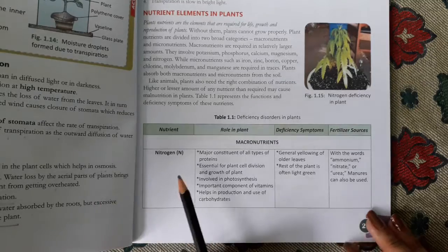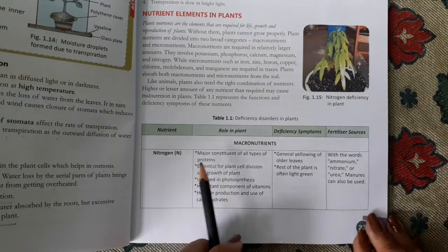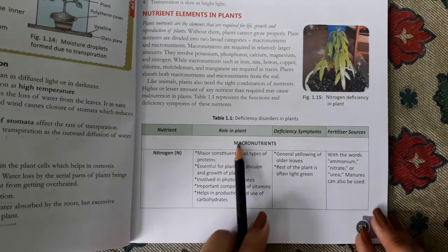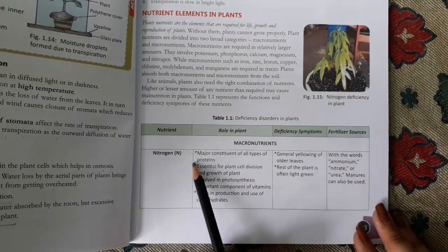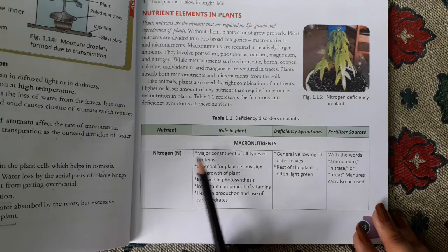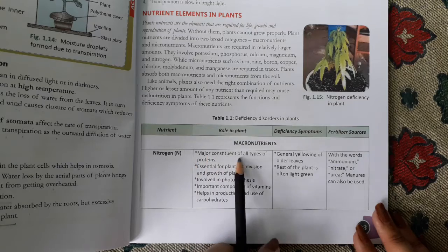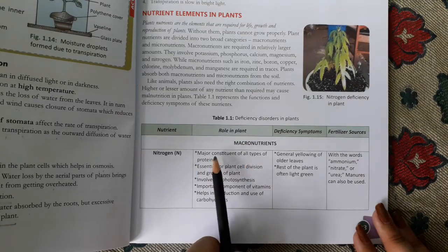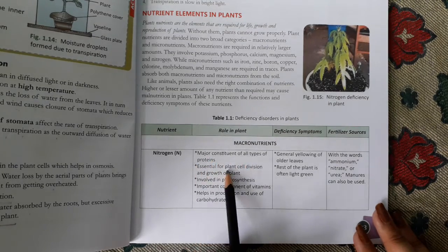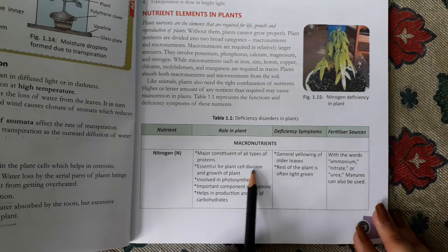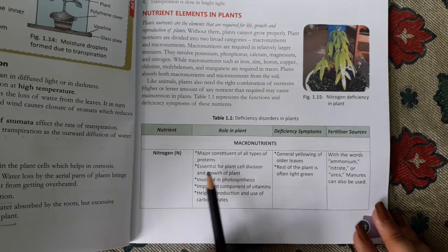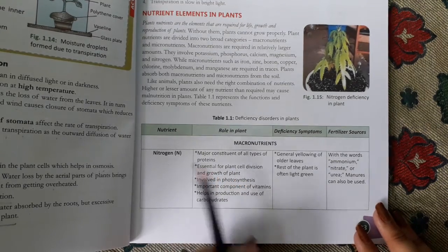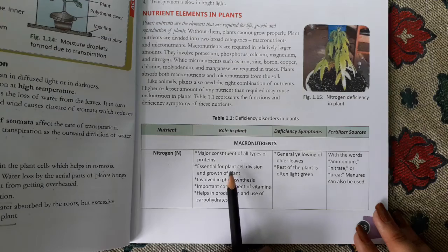First, nitrogen. This is a macronutrient, so it should be in large amounts. It is a major constituent of all types of proteins. It is essential for plant cell division and growth of plants. Nitrogen plays a very important role in plants — it is essential in cell division and photosynthesis.